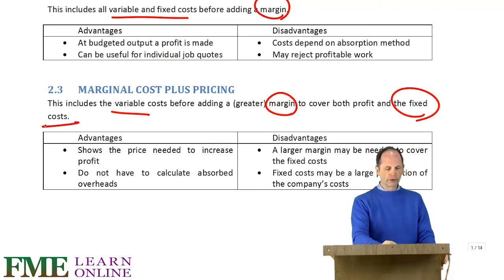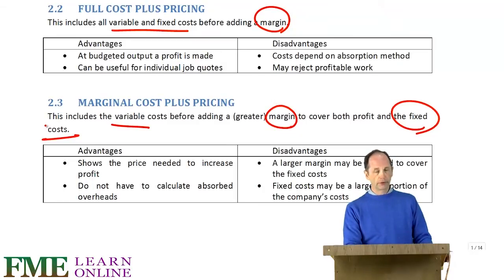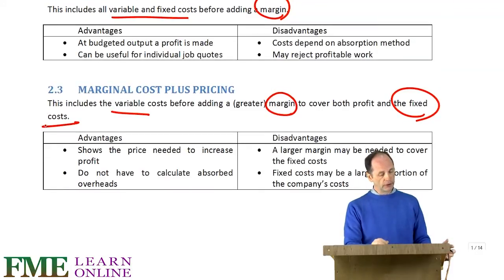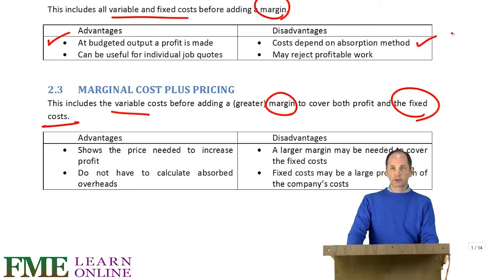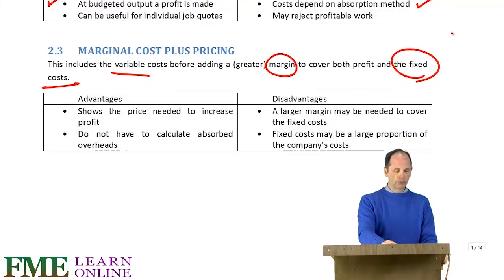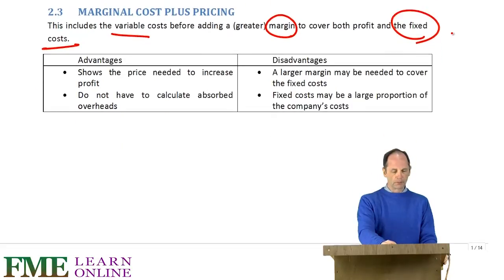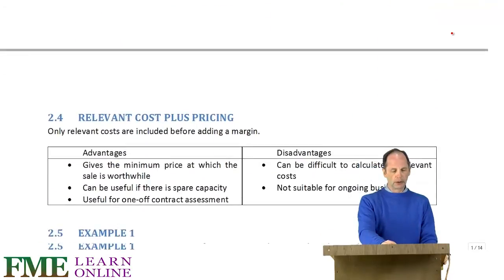The advantages and disadvantages are fairly straightforward, combining those issues just mentioned along with the absorption versus marginal costing debate. For example, an advantage of full cost pricing is that you know you're going to make a profit if you produce at a budgeted level. Disadvantages depend on the absorption costing method you're using to spread the fixed costs. I'll leave you to look at those — they're not particularly challenging.